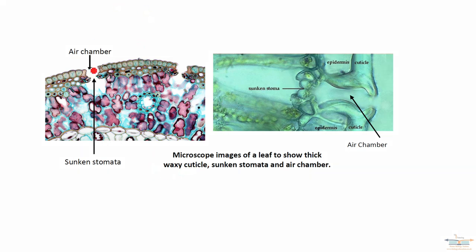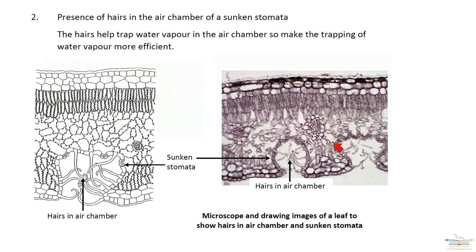Here is a microscope image of both features. On the left we have the air chamber and sunken stomata, with white spaces representing air spaces within the leaf. On the right-hand image you can clearly see the thick cuticle, the epidermis, and deeper down the sunken stomata with the air chamber.